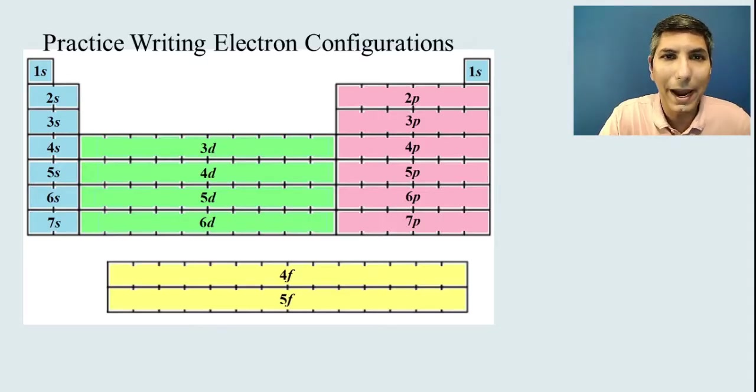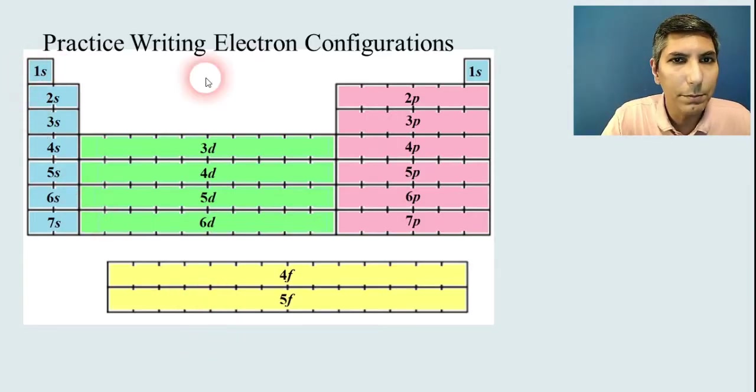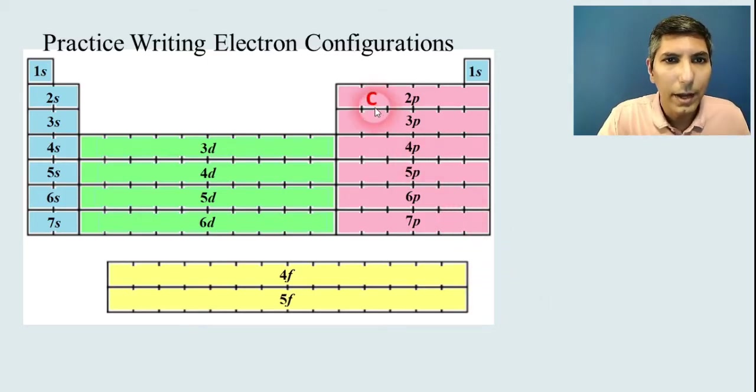If you took first year chemistry, you probably did something like this, where we have a periodic table and we just look at different atoms. So here's carbon, and the way that you write an electron configuration is you always start at the beginning of the table. We start with 1s² because there are two boxes there.